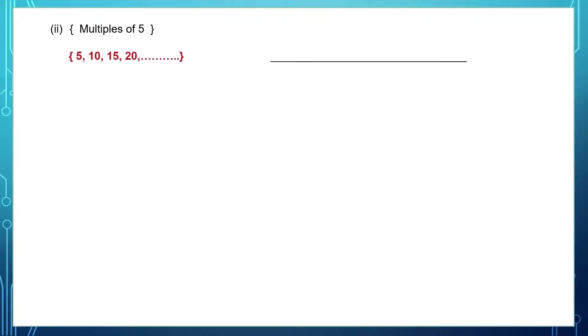Question 2: multiples of 5. Let's write down a few multiples of 5: 5, 10, 15, 20 — and all the dots indicate that there are many more multiples of 5. That means this set has an unlimited number of elements. Therefore, this is an infinite set.